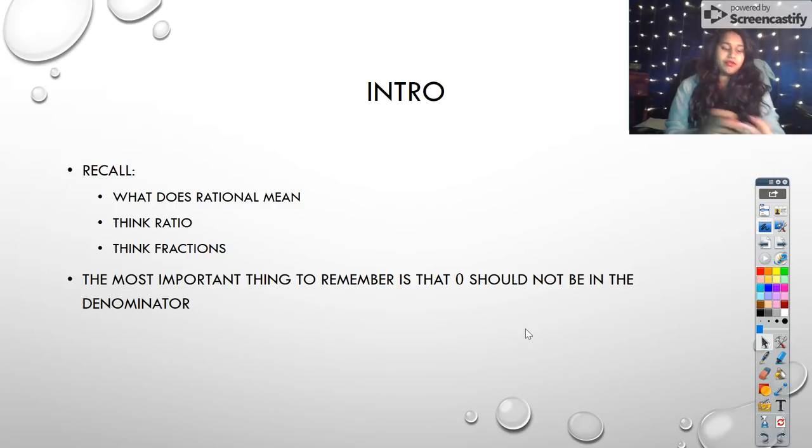So just to recall, what does rational mean? We can break rational down and see it as ratio, and what is a ratio? We would think of fractions. So when we say rational functions, we really just mean functions that are fractions. The most important thing to remember, though, is because we're working with fractions, now we have to worry about zeros in the denominator. In fact, if you have zero in the denominator, we call this an undefined function or point, but if it's zero over zero or infinity over infinity, we actually call this indeterminate.